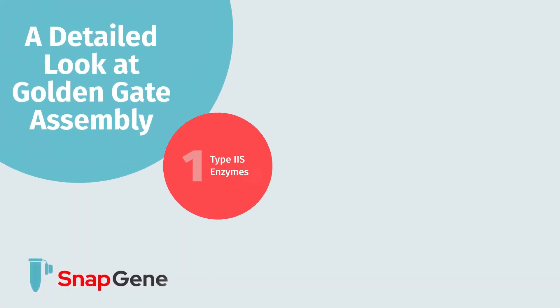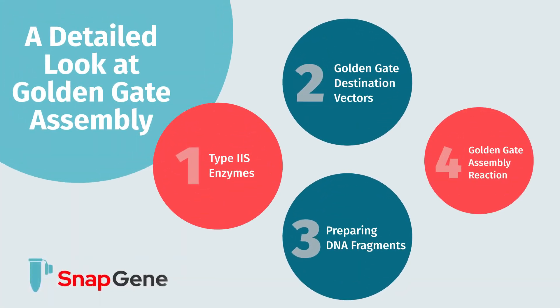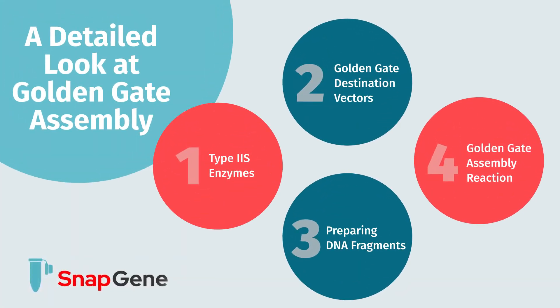Golden Gate assembly is a versatile cloning technique that allows the seamless assembly of multiple fragments in a single cloning reaction.